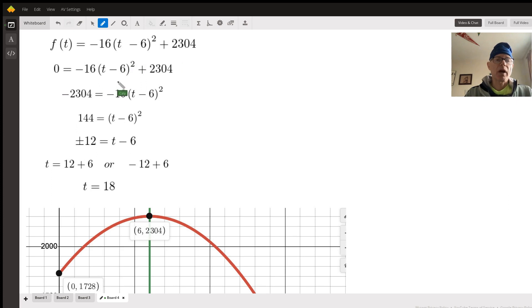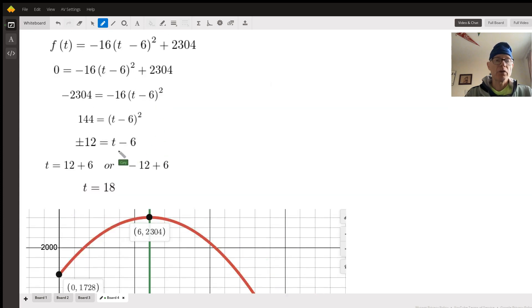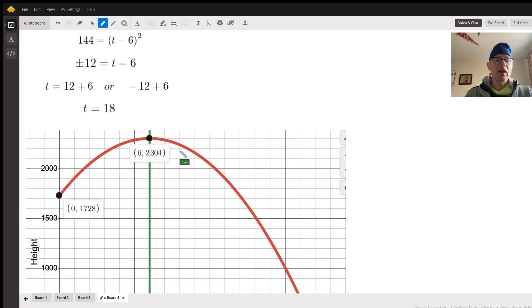And here's why, because first we're just going to subtract 2304 from both sides. And then we're going to divide by negative 16, so negative divided by negative gives us 144. This is a square, to undo a square you take the square root, which could be positive or negative 12, square root of 144, either positive or negative 12, because t is an unknown. And then we're going to add 6 to get t by itself.